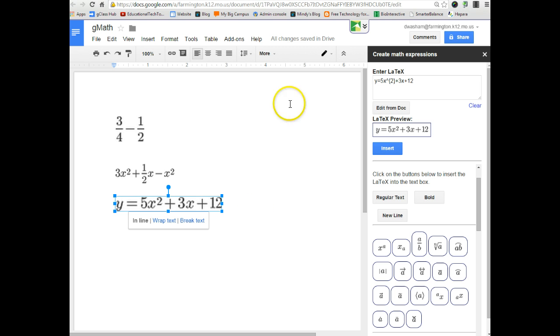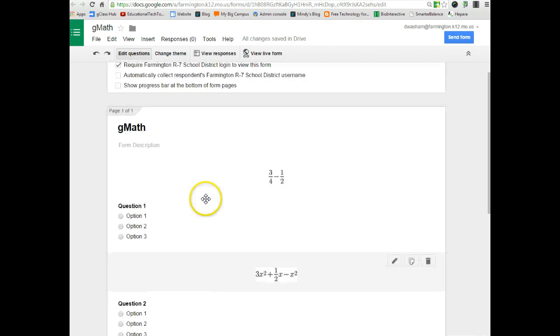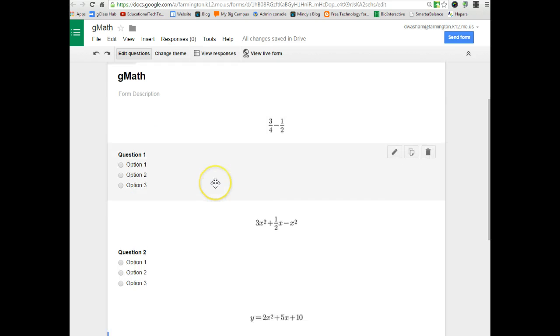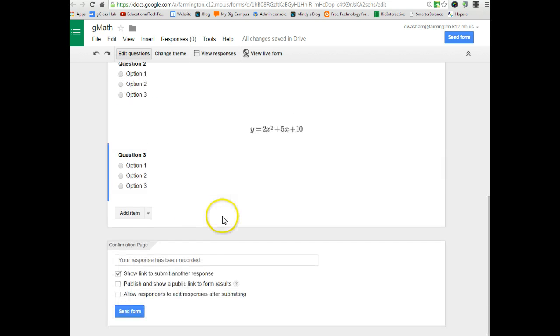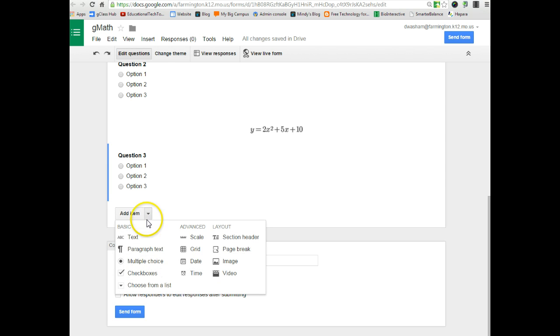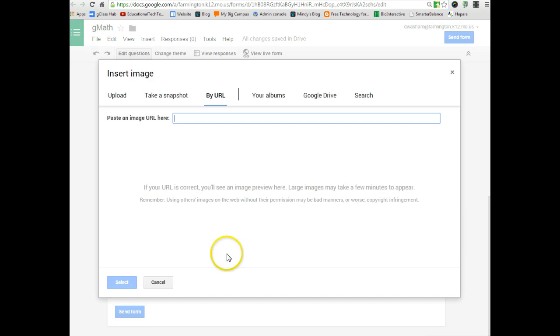Once I copy the URL I go to my Google Form that I was working in. Here's some of my sample questions that I already made and I'm going to add another one. Next to add item I choose add image, and I want to add the image by URL.